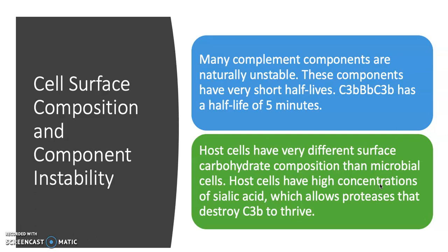The formation of C5 convertase is generally an endpoint of the complement system's activity. Once C5 convertase is formed, it starts cleaving C5 into its two smaller components: C5A, which is an anaphylatoxin that causes an inflammatory response, and C5B, which is essential to creating MACs. Because C5 convertase has such a short half-life, it won't be able to cleave many C5 molecules before it disappears — this is an innate way the complement system regulates itself.